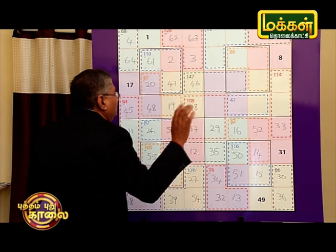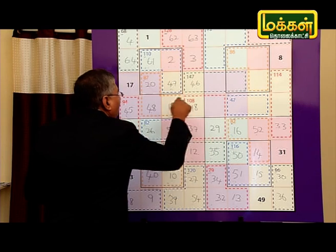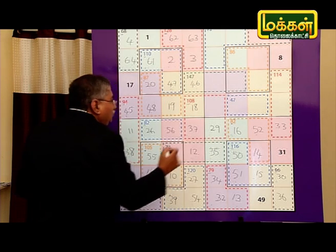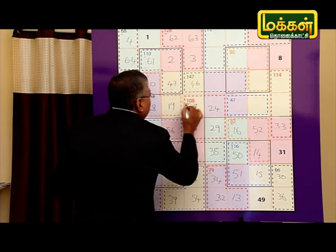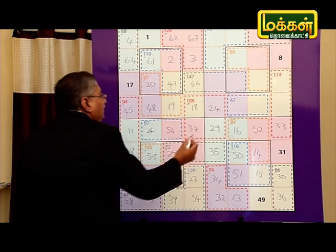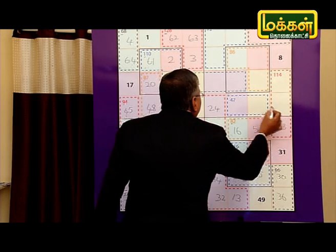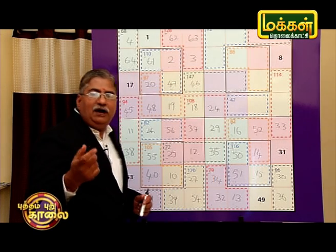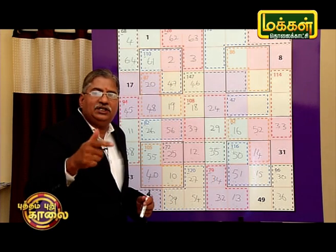100 minus 84 is 54. 54 plus 8 is 24. So, here we come to 24. If you come here 24, what do we come here? 48 plus 24.